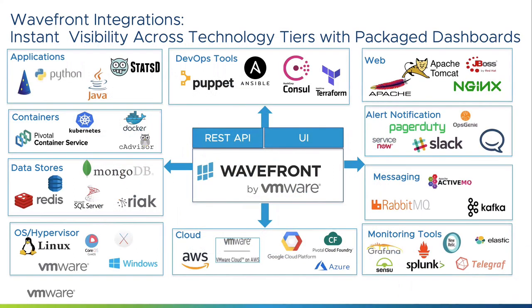We now have more than 165 different integrations, and we build around 30 to 50 new integrations every quarter, while also revisiting existing ones to build deeper understanding and more meaningful dashboards. This is a constantly changing landscape for us. We can take metrics from many different technologies — on-premise or in the cloud — including infrastructure services, serverless technologies, and Lambda-type services. I'll show this in detail during the demonstration.